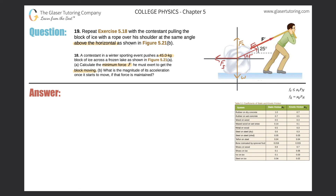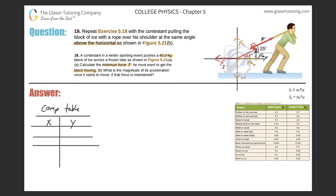Now we have our table set up. Before we start plugging values into the component table, I want to detail the x and y components of the applied force. I'll call these F sub a in the x direction and F sub a in the y direction, where F sub a is the overall applied force. Let's create our component table with x and y columns.